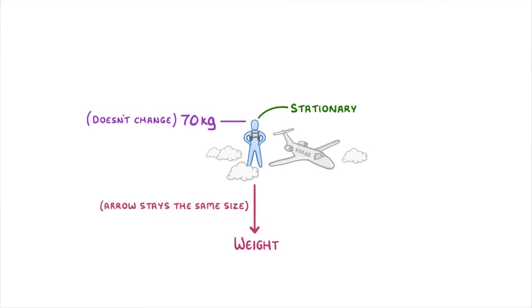Now, in this instance that they first step out of the plane, the weight will be the only force that's acting on them. And so the resultant force, which remember is the combination of all the forces acting on an object, will be the same size and direction as the weight, because there aren't any other forces. And so this resultant force will cause them to accelerate downwards.